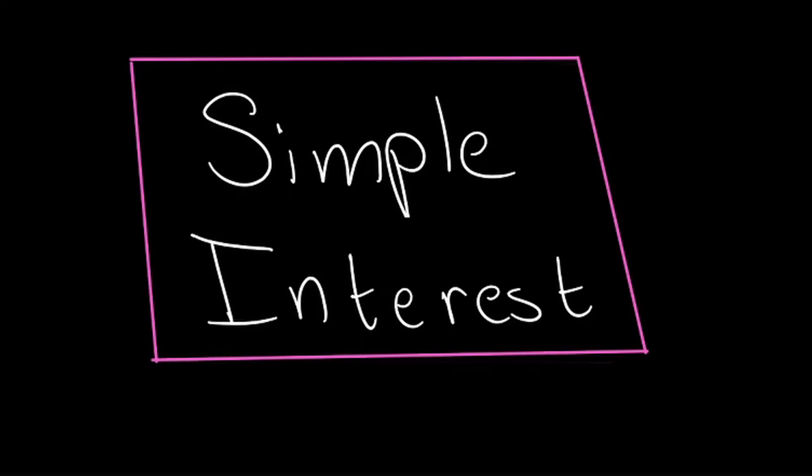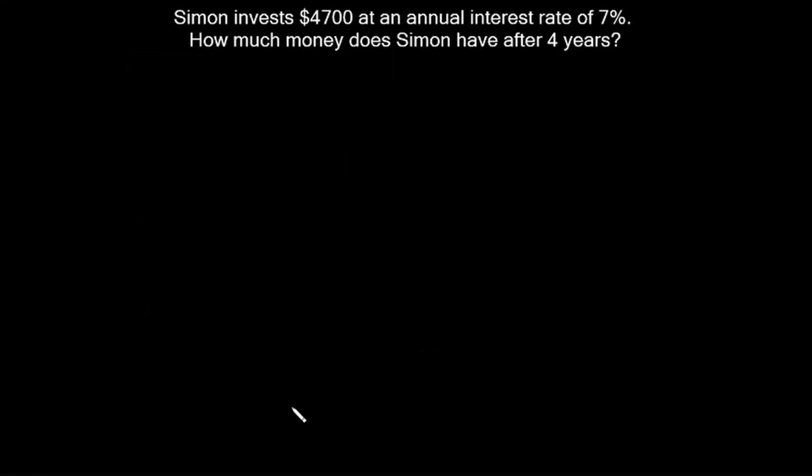Simple Interest. Simon invests $4,700 at an annual interest rate of 7%. How much money does Simon have after 4 years?